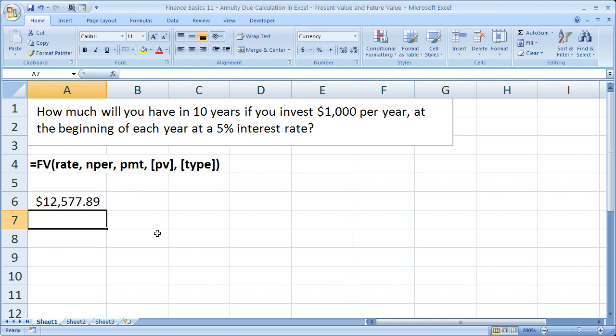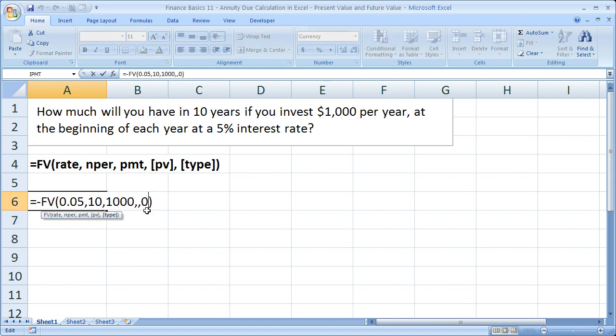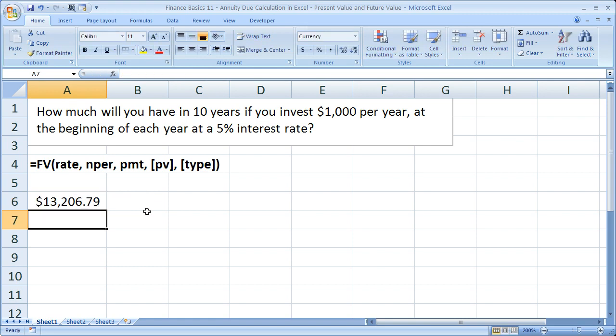You can see it goes down significantly. So you make a lot more money if you deposit it at the beginning of the year because you get the extra year for compounding interest.